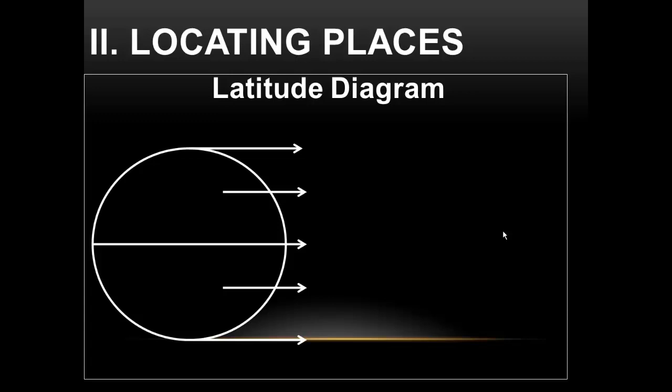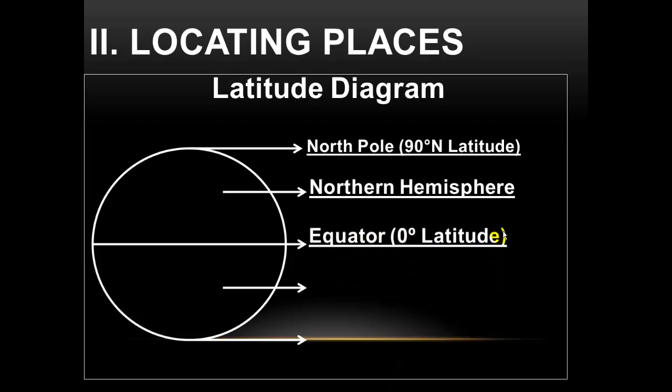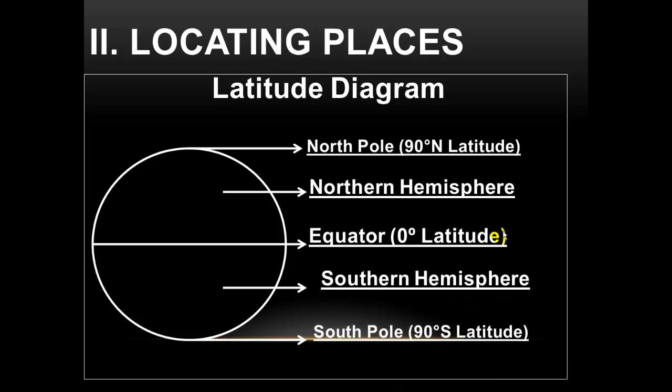This diagram gives us some important prominent lines of latitude. At 90 degrees north is the North Pole — that's where Santa Claus is supposed to live. At zero degrees latitude is the equator. Then comes the southern hemisphere, and at 90 degrees south is the South Pole, located on the opposite side of the Earth from the North Pole.